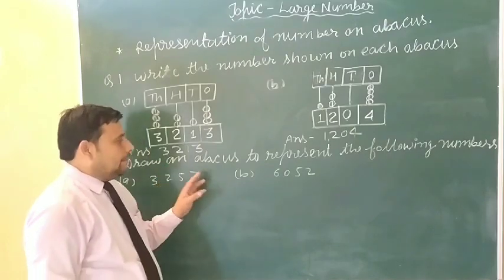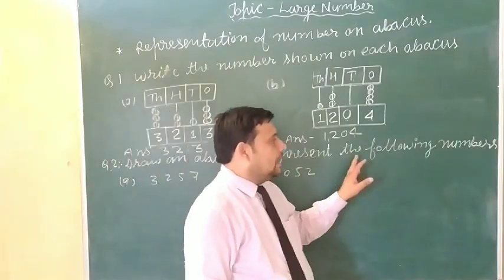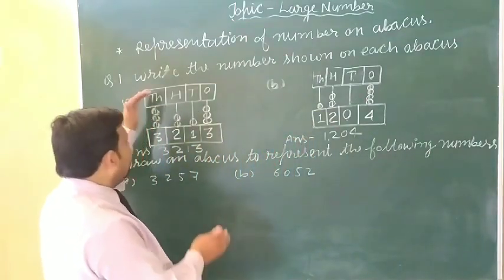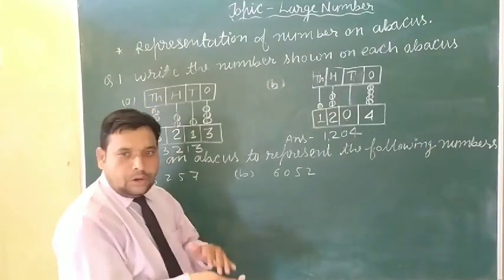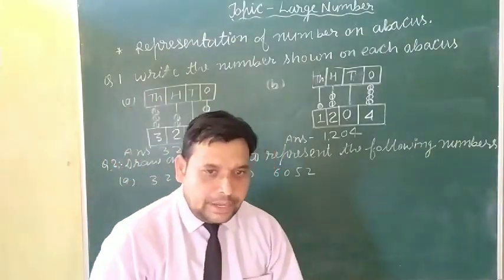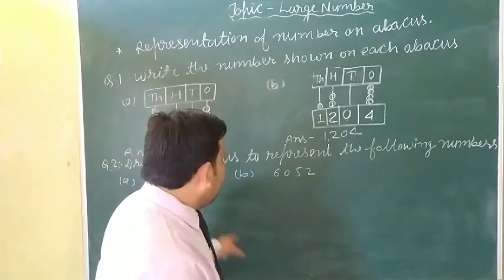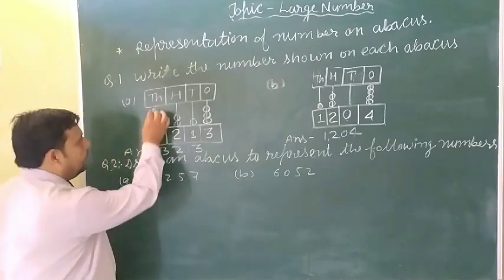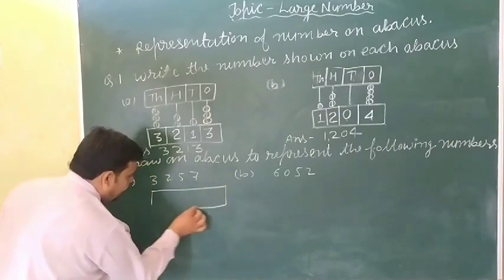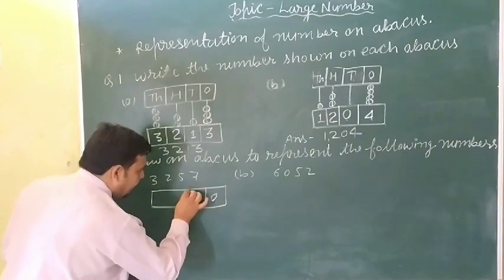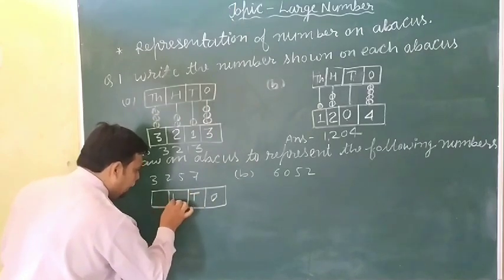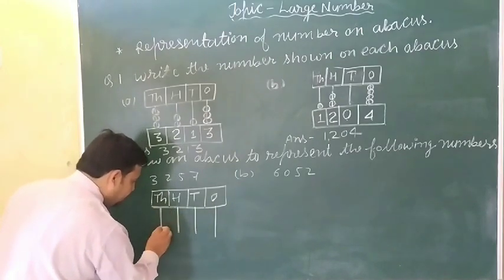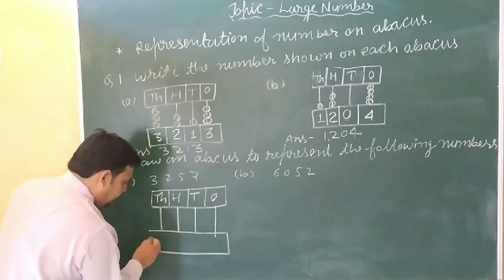Draw an abacus to represent the following numbers. Abhi meine question ko dekha — pehle abacus given tha, usse number ko write kiya tha. Ab numbers given hain, ab usse abacus par represent karna hai. Toh 3,257 — yahan par box banayenge: one, ten, hundred, thousands.